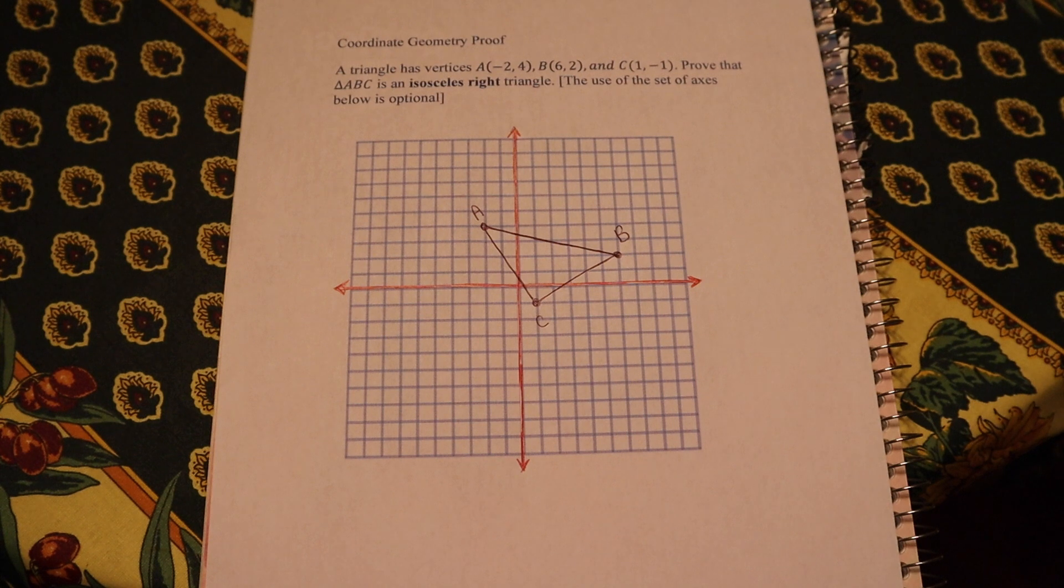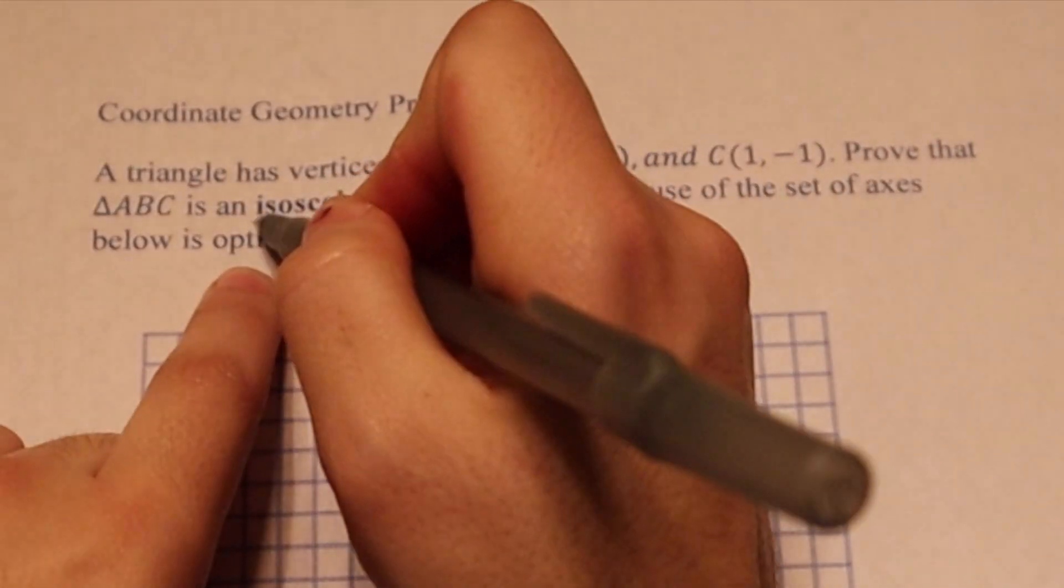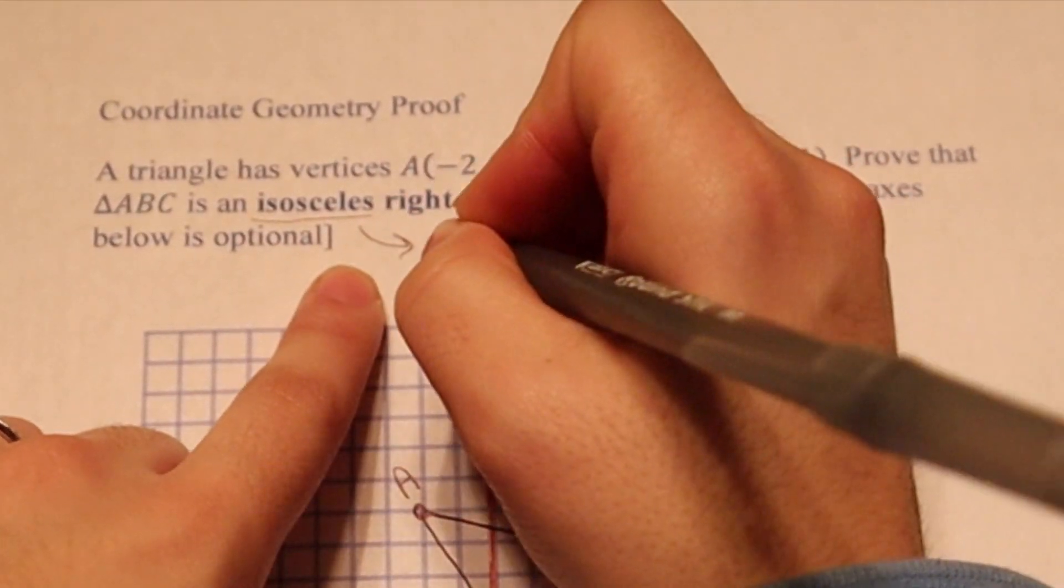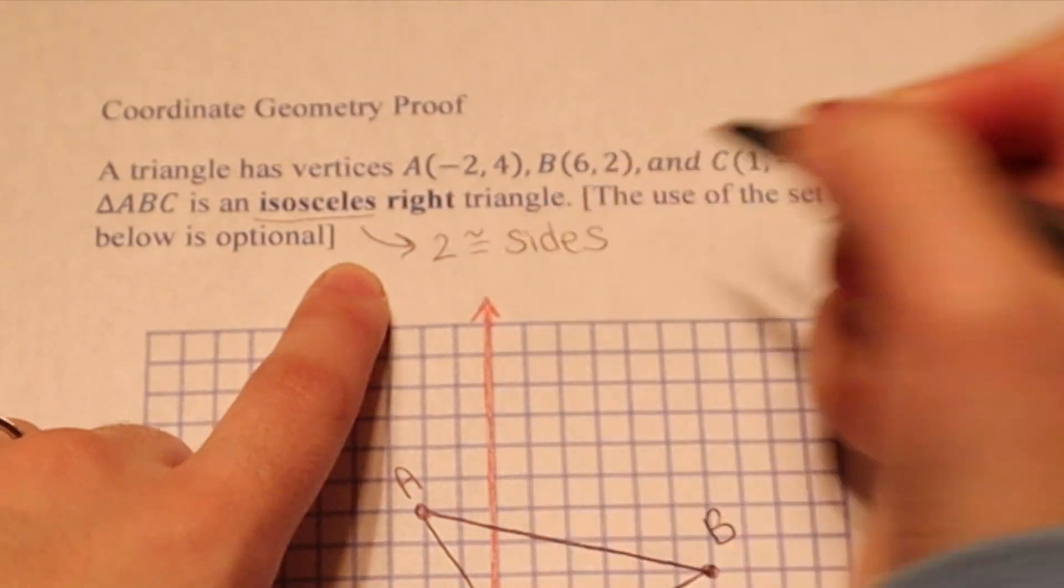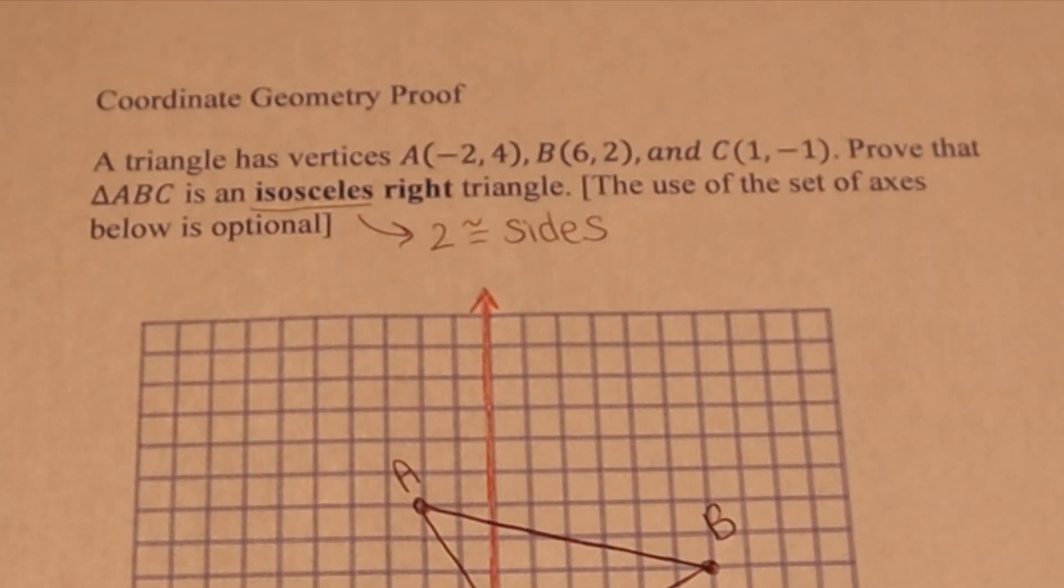So before we even start the problem, let's try to recall what it means to be an isosceles triangle. An isosceles triangle has two congruent sides, meaning two sides with equal measure.